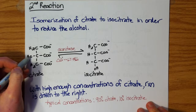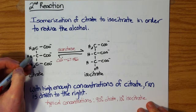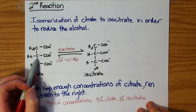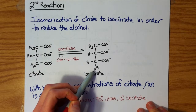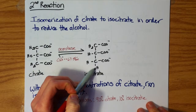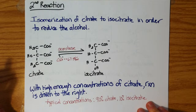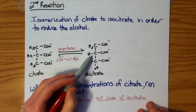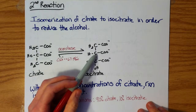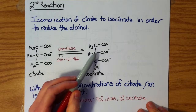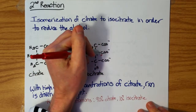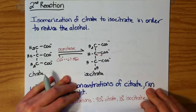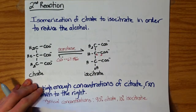Remember, this is a tertiary alcohol because the carbon to which the hydroxyl group is attached is also attached to three other carbons. Over here, though, we have a secondary alcohol because the carbon to which the hydroxyl group is attached is only attached to two carbons. So we've formed our secondary alcohol — we now have hydrogens we can pick off. This is going to be the alpha carbon, and we're going to perform beta cleavage between the alpha and beta carbon, cutting this bond and releasing that carboxylate group into solution as CO2.